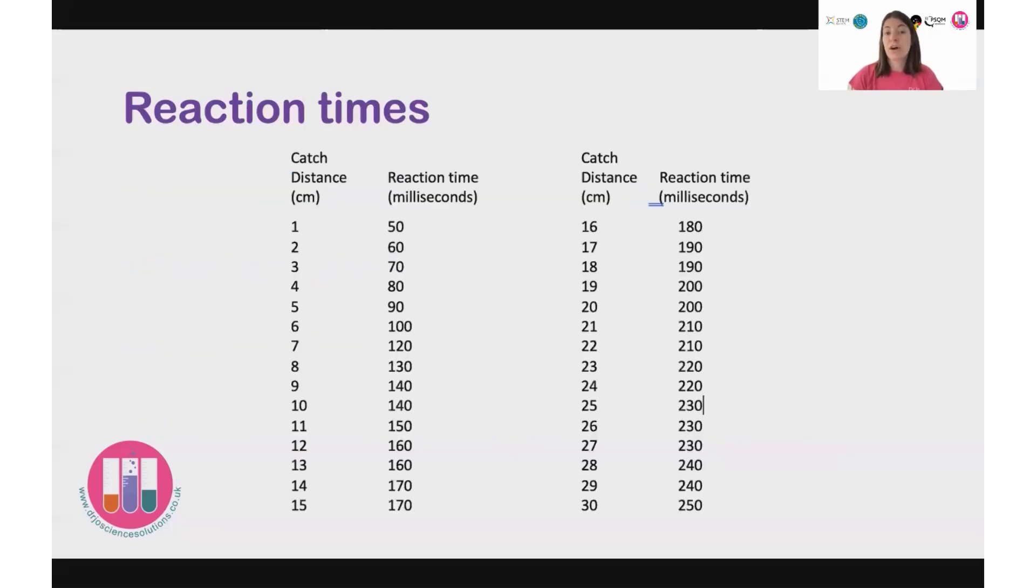You could, if you'd like, translate the distance that the ruler fell before you caught it into a reaction time in milliseconds. A millisecond is a thousandth of a second. So if we look at my 27 centimeters on my first drop, that would give me a reaction time of 230 milliseconds. Whereas my second drop, which is around the 16, 17 mark is only 190 milliseconds.